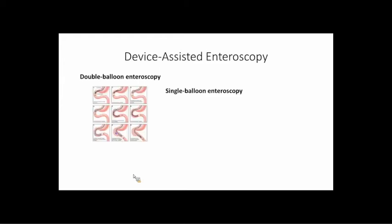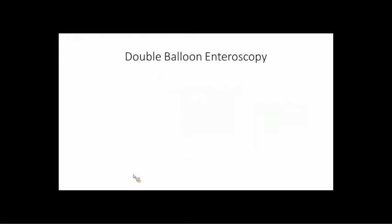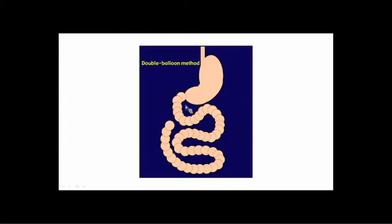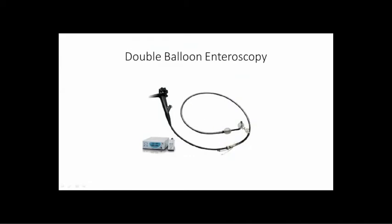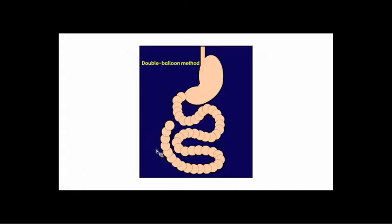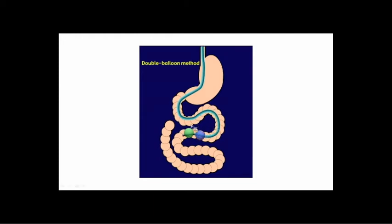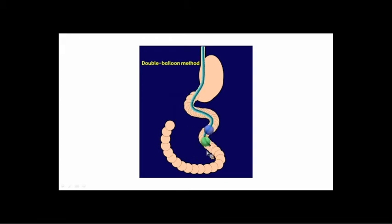After positive capsule or CT, the next step is device-assisted enteroscopy. Device-assisted enteroscopy comes in multiple flavors: double balloon enteroscopy, single balloon enteroscopy, and spiral enteroscopy. With double balloon enteroscopy, you have a long endoscope with a plastic overtube. There's a balloon at the end of the scope and a balloon at the end of the overtube, and a machine that inflates and deflates the balloons serially. You reintroduce the scope, advance the overtube using a Seldinger-like technique, then advance the scope further, blow up the balloon, advance the overtube, blow up its balloon, deflate, and advance again.